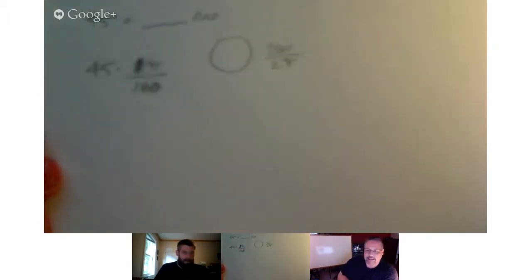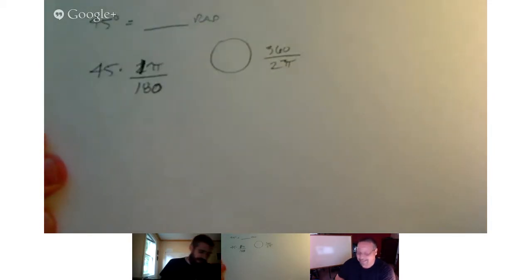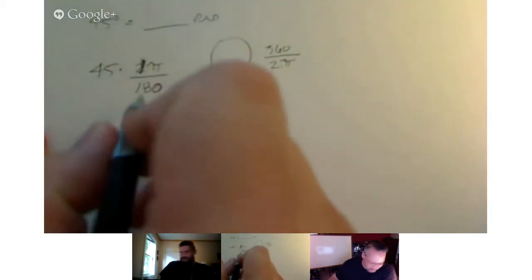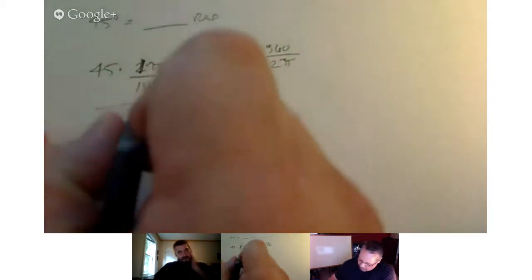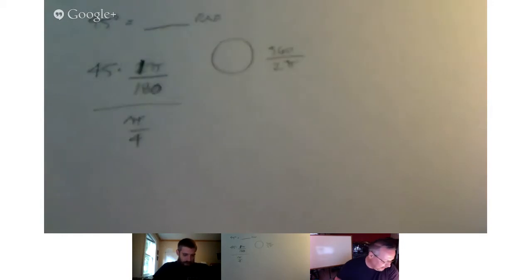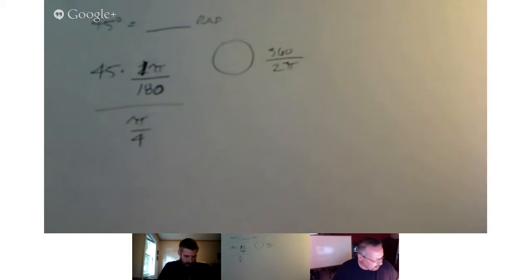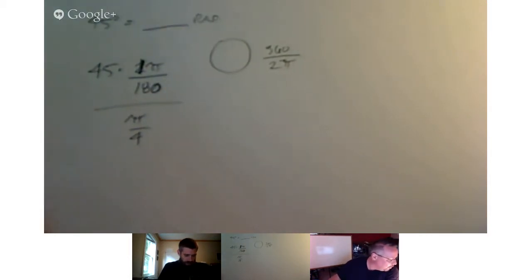That doesn't quite work out that way — it's either 2 pi over 360 or 1 over 180. So we end up with pi over 4. That was pretty straightforward. The other example he gave us was convert pi over 3 to degrees.